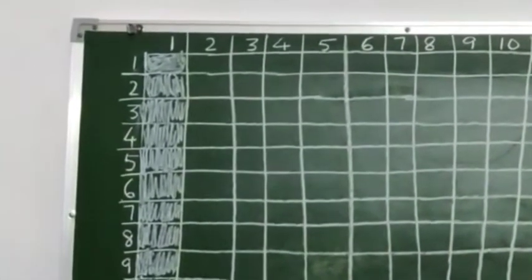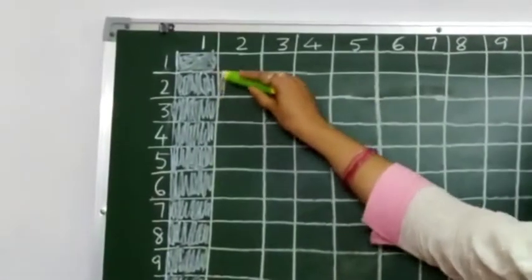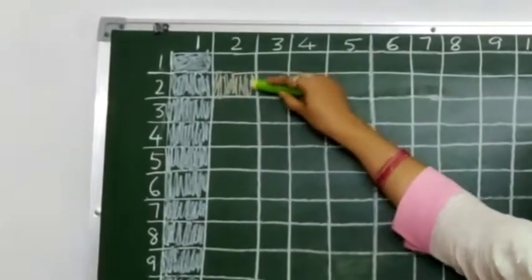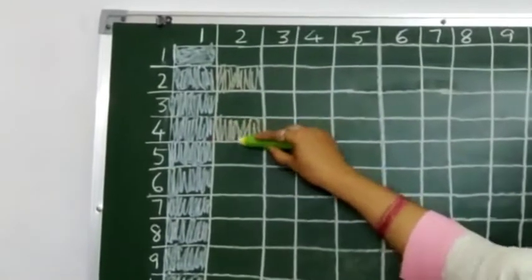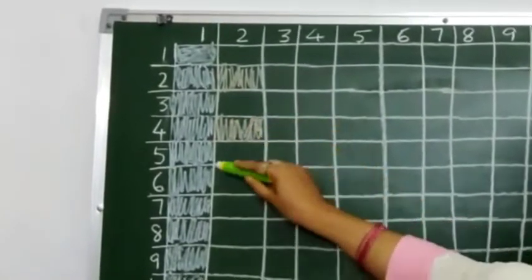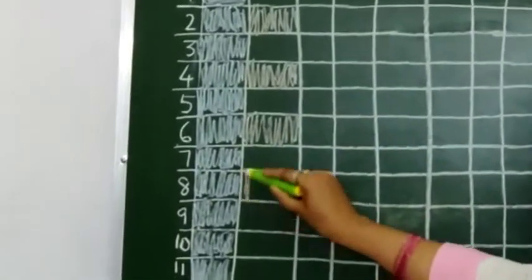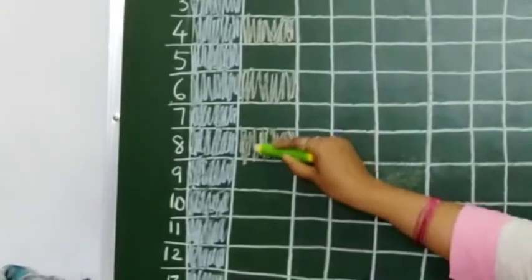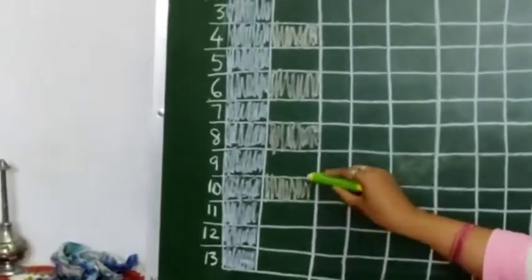After filling this, now you have to leave one box and color each alternate box like this — I am using orange color. You have to fill all the alternate boxes like this, leaving one in between and coloring the alternate with the color you want, whichever color you wish.